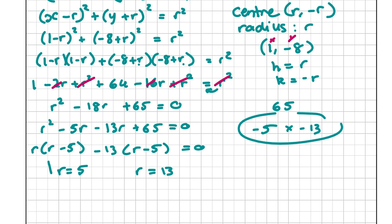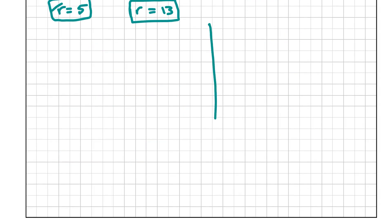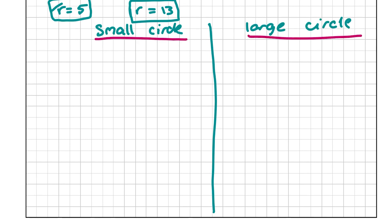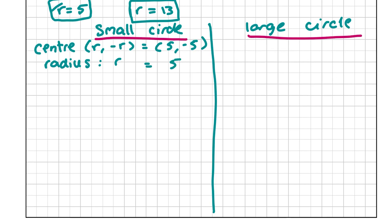It's clear that r equals 5 corresponds to the smaller circle and r equals 13 corresponds to the larger circle. For the small circle the centre is (5, minus 5) and the radius is 5. For the large circle the centre is (13, minus 13) and the radius is 13.